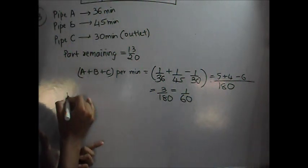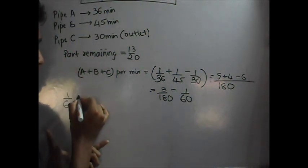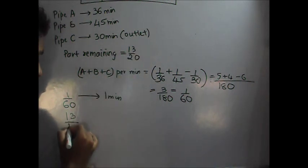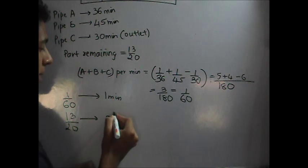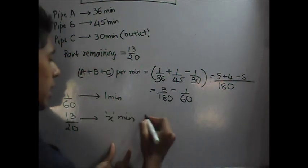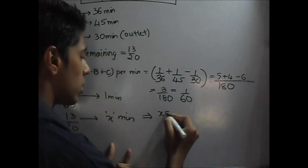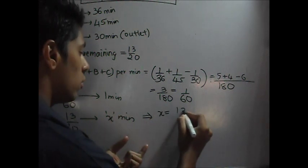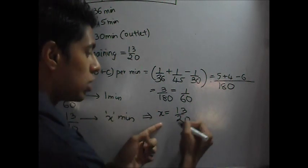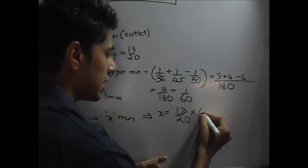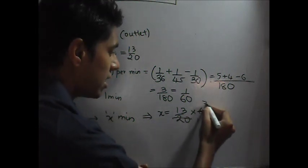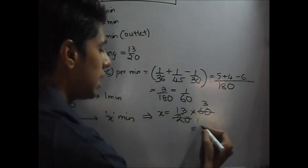Now, look at this. 1 by 60 is filled every minute. So, 13 by 20 fills in X minutes. So, if you cross multiply, you will get X is equal to 13 over 20. This would be 60 multiplied here. So, it is times 60. 2 1s are, 2 3s are. So, this is 39. 39 minutes.